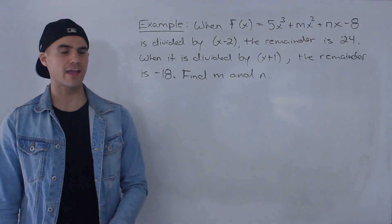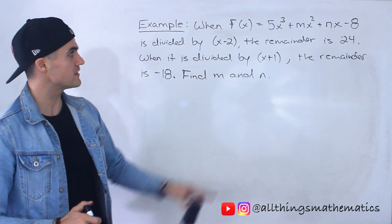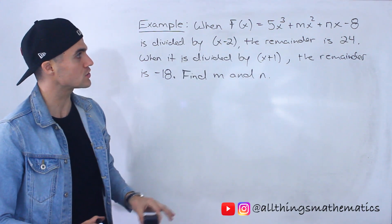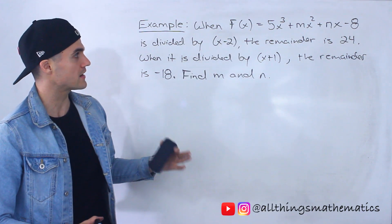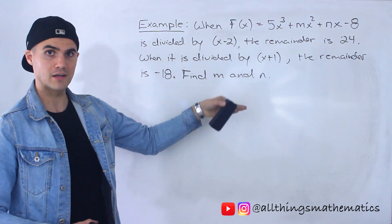Yo, what's up everyone? Patrick here, welcome back. And moving on to another example dealing with the remainder theorem. So when this function f(x) = 5x³ + mx² + nx - 8 is divided by x - 2, the remainder is 24.